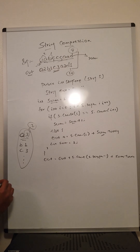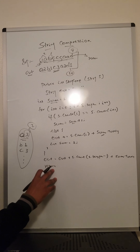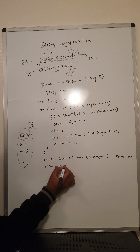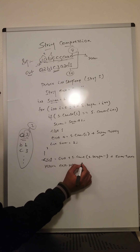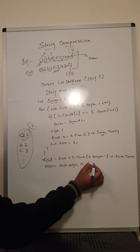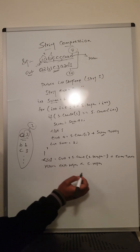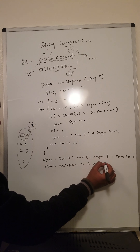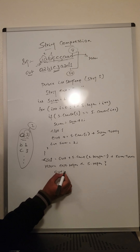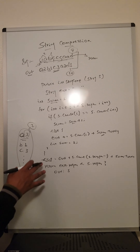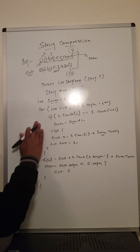Finally, we compare the two strings. We return the output only if its length is less than the input string length; otherwise we return the original input. We compare output dot length with the input string's length, then return the appropriate one.